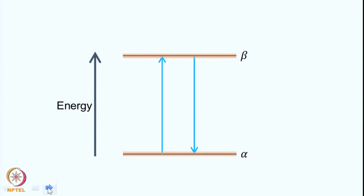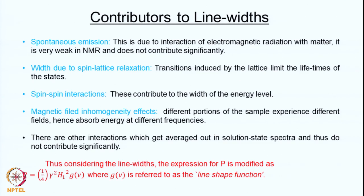Therefore, in an ensemble of spins, some will absorb energy at one particular frequency and some at a slightly different frequency, and because of that you get a line width. What are the factors which influence these line widths? For the two-level system, the alpha and beta states each have a certain width in energy, and because of this there will be a certain width in the frequencies absorbed or emitted — the line width.